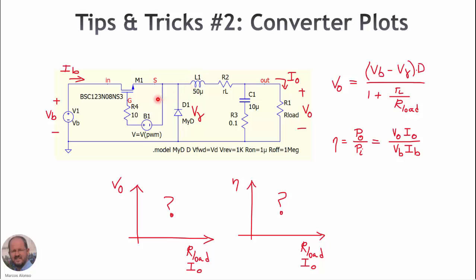The idea is that we have a converter, as shown here — a buck converter. We know that this converter operating in continuous conduction mode has an output voltage that can be represented with this expression. Vg is the input voltage, Vgamma is the voltage dropped across the diode. D is the duty cycle. RL is the series resistance of the inductor and RLoad is the load resistance.